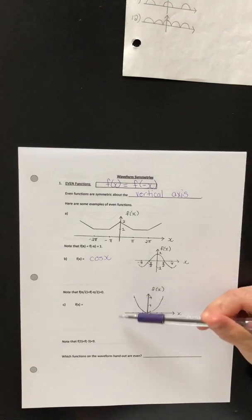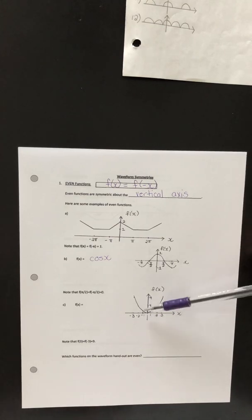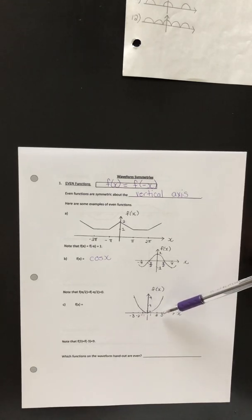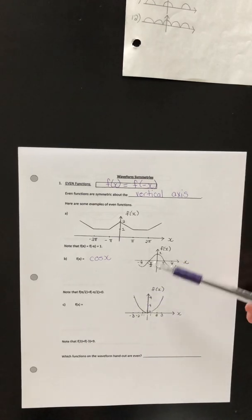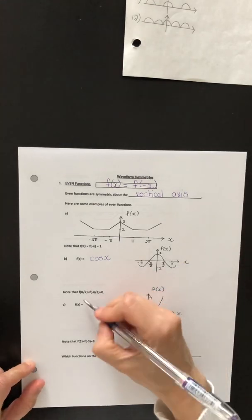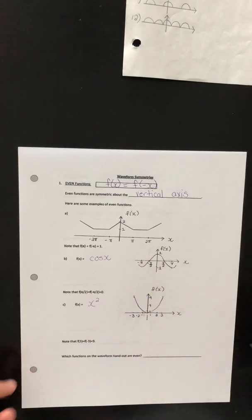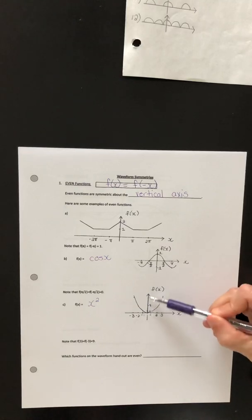Our third example here — some points on this graph would be (1, 1), (negative 1, 1), (2, 4), (negative 2, 4), (3, 9), (negative 3, 9). So this, of course, is y equals x squared, and it is symmetric about the vertical axis.